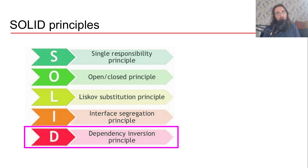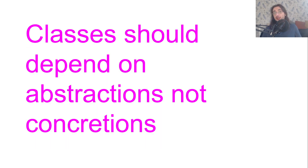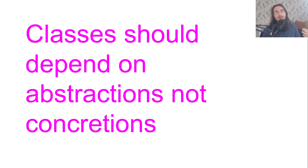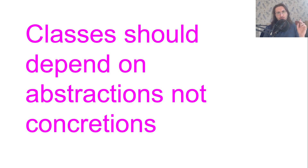Dependency inversion tells us that classes, or our code, should depend on abstractions but not on concretions. What this means is basically that you want your classes to depend on interfaces, not on concrete objects. The reason why you want to do that is because you want to depend on things that are stable and don't necessarily change at any time. We're going to see what all of this means practically through a Python code example.